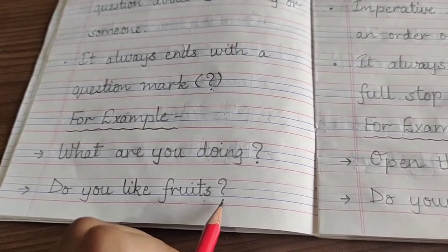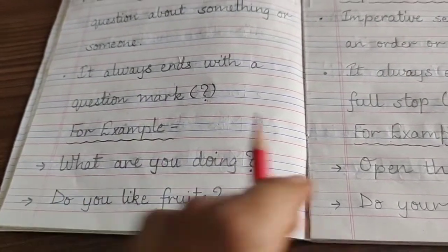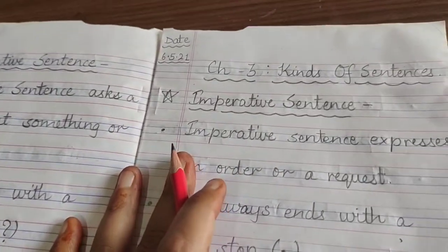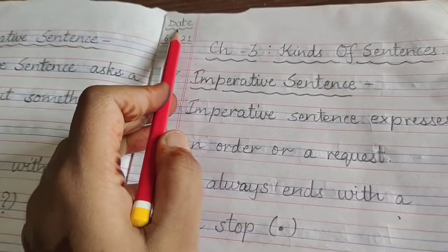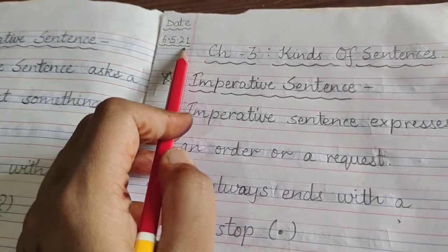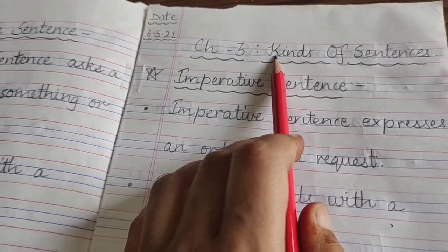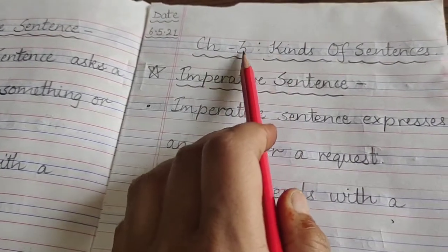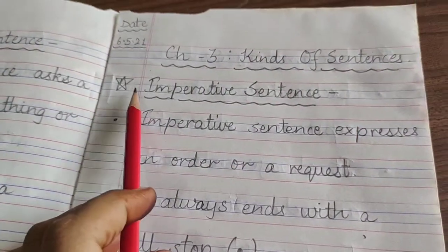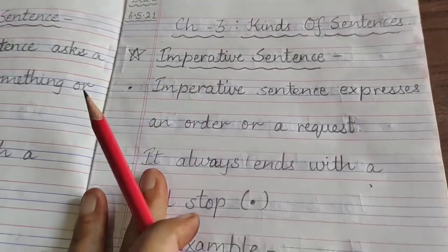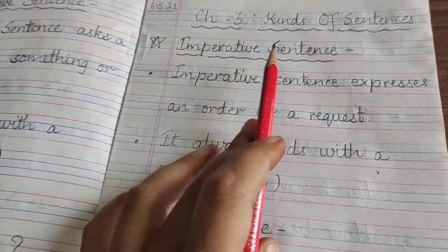By the question mark we can make out that the sentence is an interrogative sentence. Now, moving towards our new page, you will write down today's date, that is 6-5-2021. In the first line, give the heading of the chapter number with its name — chapter number 3: kinds of sentences. In the second line, start writing with the third kind of sentence, that is imperative sentence.